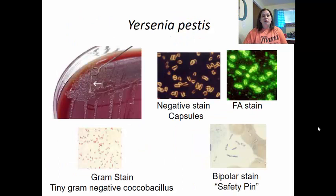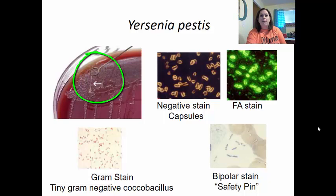When growing Yersinia pestis in the lab, it creates sticky colonies — you can see the loop being pulled up from the colonies. It can be identified using a negative stain showing capsules, and a fluorescent antibody stain to test for that particular strand. It causes tiny gram-negative coccobacilli and can have bipolar staining — when doing the bipolar stain it looks like a safety pin.